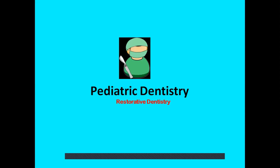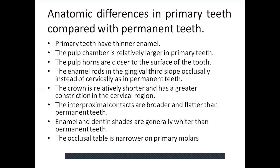So let's dive in. The anatomical differences in the primary teeth as compared with the permanent teeth — I have summed up some of these here. Primary teeth have thinner enamel. The pulp chamber is relatively larger in primary teeth. The pulp horns are closer to the surface of the tooth. The enamel rods in the gingival third slope occlusally instead of cervically as in the permanent teeth. The crown is relatively shorter and has a greater constriction in the cervical region. The interproximal contacts are broader and flatter than in permanent teeth. The enamel and dentine shades are generally whiter than permanent teeth. The occlusal table is generally narrower on the primary molars.